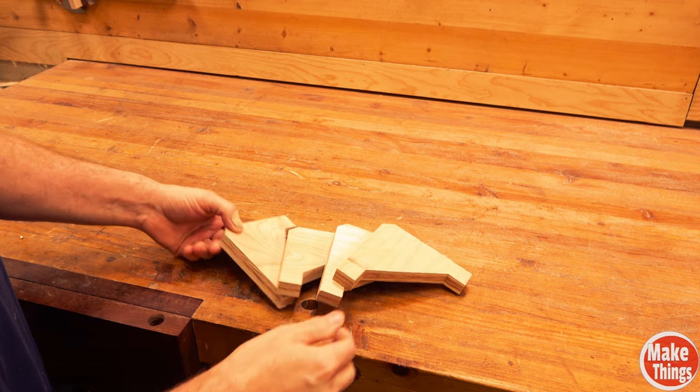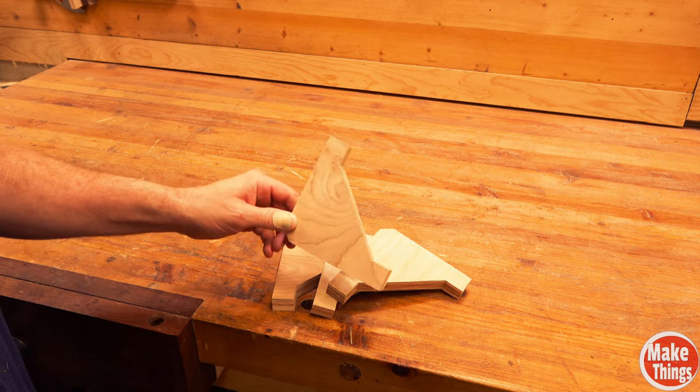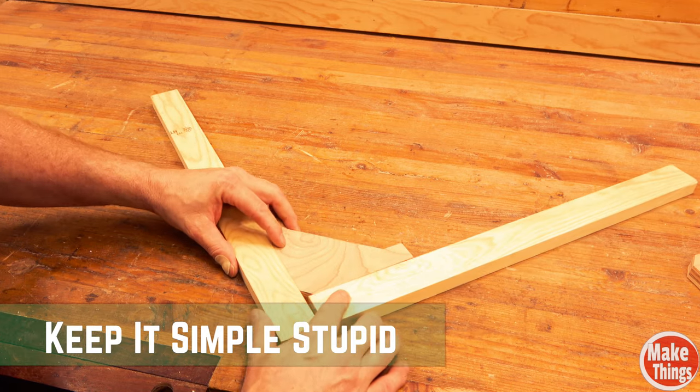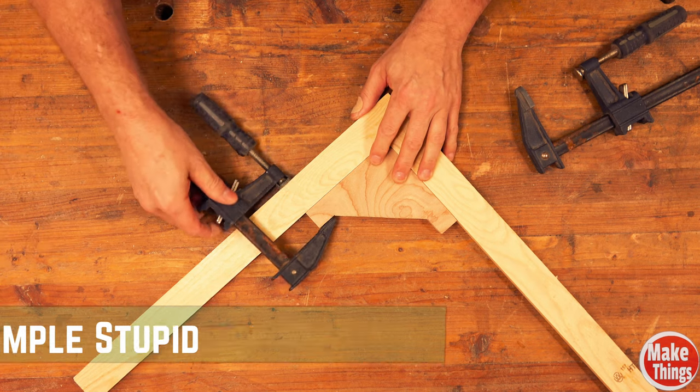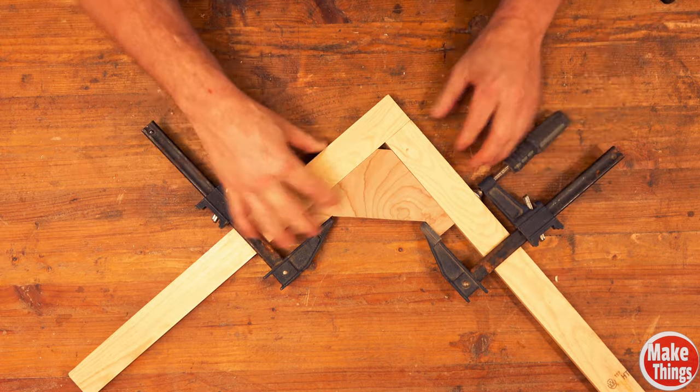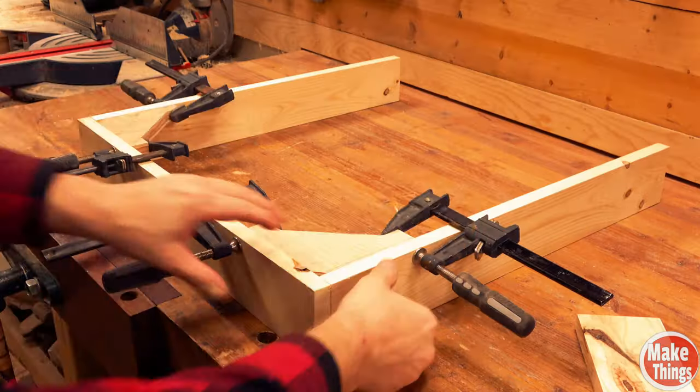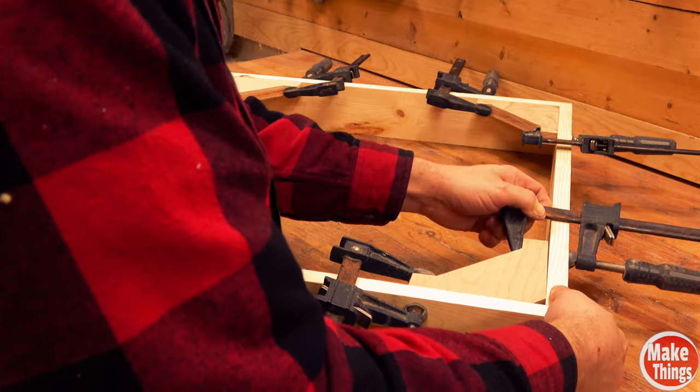Before we get started, I've got to come clean. In the spirit of KISS, you really only need a few of these to get your box square. And while this design makes getting nearly every picture frame easily square, it does get a little difficult when you're trying to clamp a box.